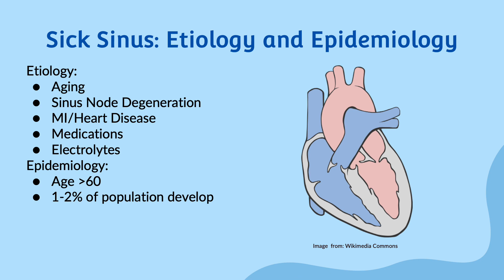The arrhythmia is most commonly seen in individuals over the age of 60, but it can occur at any age. It is estimated that 1-2% of the population will develop Sick Sinus Syndrome in their lifetime.